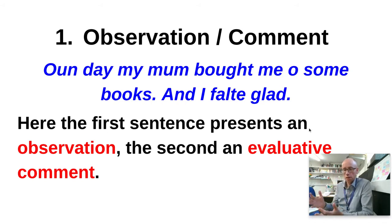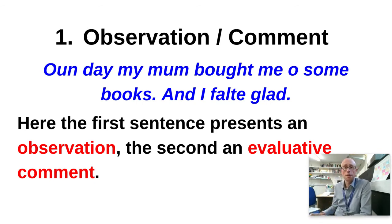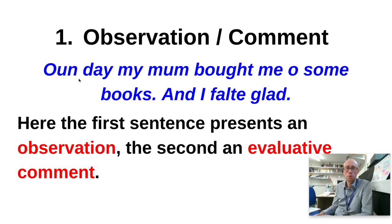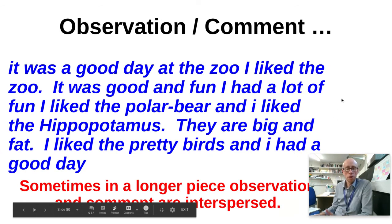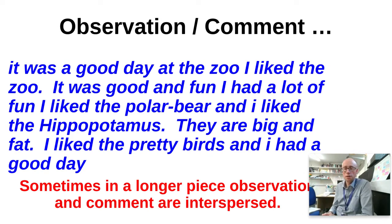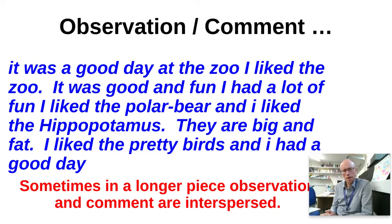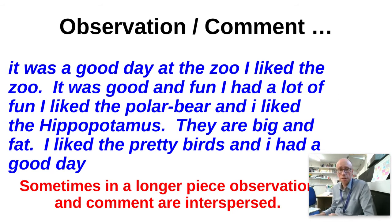Jean Rothery identified some of the earliest forms that children were made to do in classrooms. The earliest one is about observation/comment. There's an example of a six-year-old writing: 'One day, my mum bought me some books, and I felt glad.' Here you've got a first sentence which presents an observation, and then in the second sentence you've got an evaluative comment. Very simple, very straightforward observation-comment. Sometimes it's a longer piece where the observations and comments are interspersed: 'It was a good day at the zoo. I like the zoo. It was good and fun. I had a lot of fun. I like the polar bear. And I liked the hippopotamus. They're big and fat. I like the pretty birds. And I had a good day.' So you've got this interspersing of observational and evaluative comments.